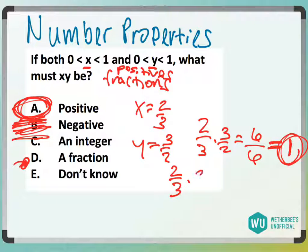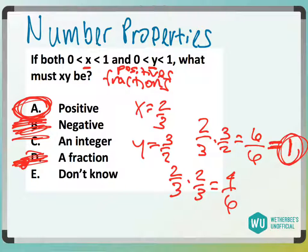I could say they're both 2 thirds. That would be like 4 over 6, and that's a fraction. But we know that if they're both positive fractions, if we multiply them together, they'll have to be positive.